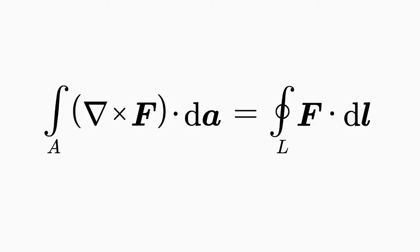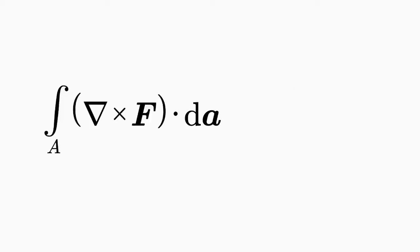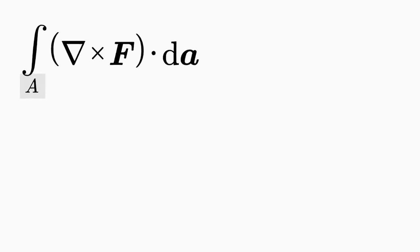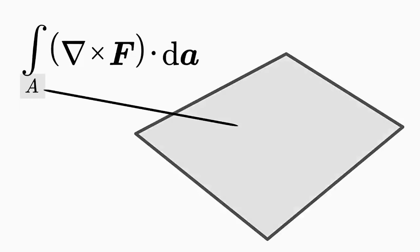Now you should have understood the right-hand side of the curl integral theorem. Let's look at the left-hand side now. Here the surface A occurs again. This surface, unlike the divergence integral theorem, must not be a closed surface, but it is simply the surface enclosed by the line L.